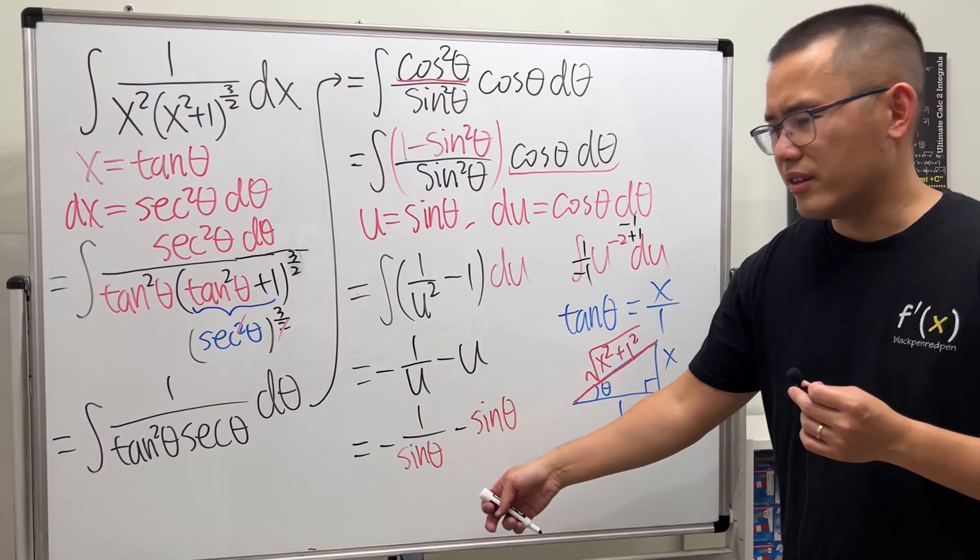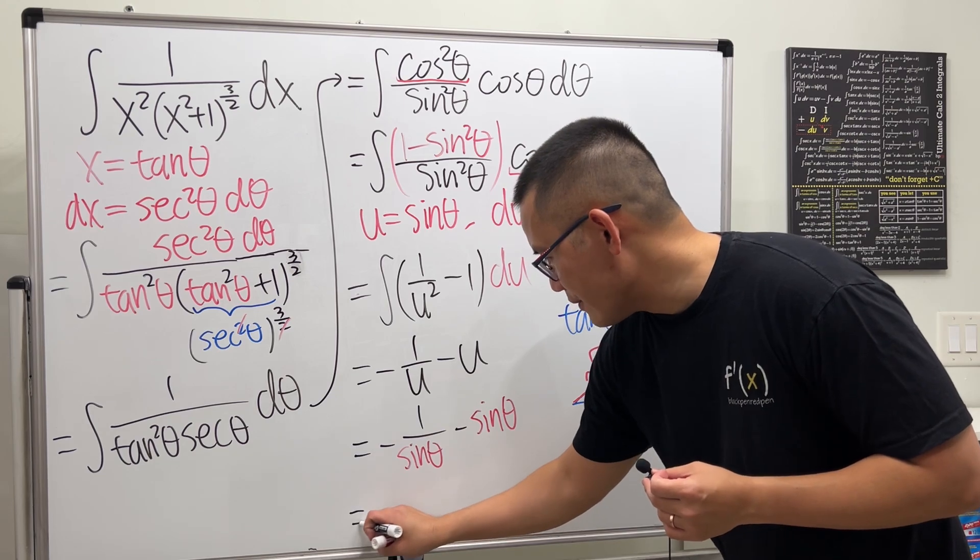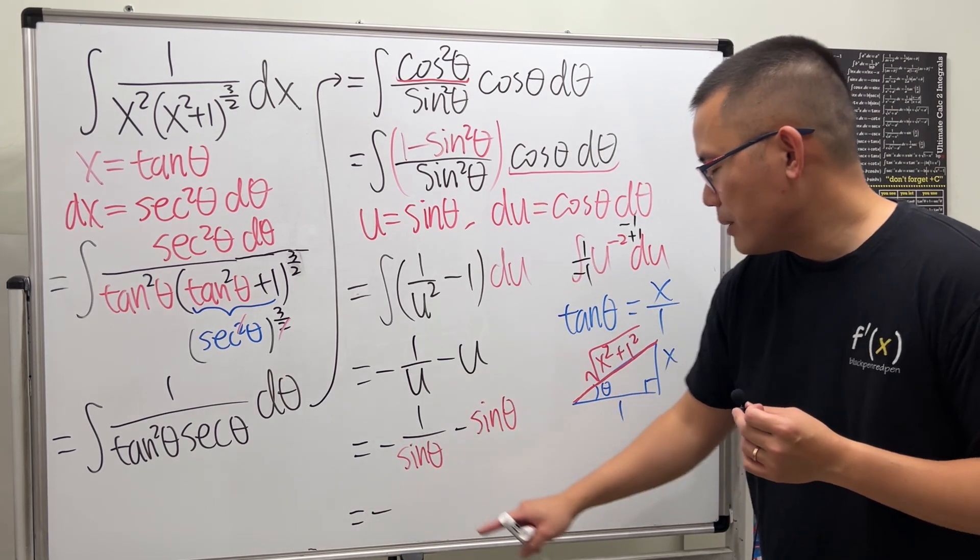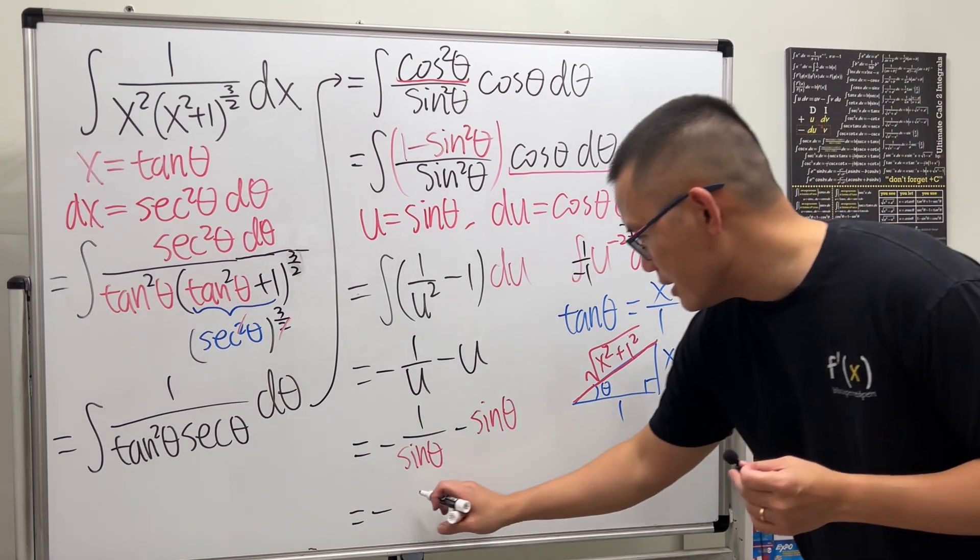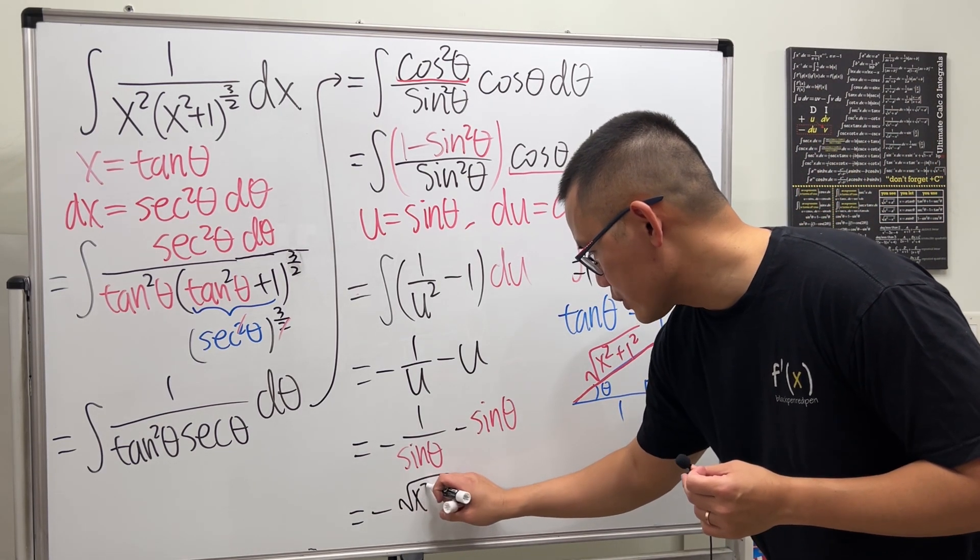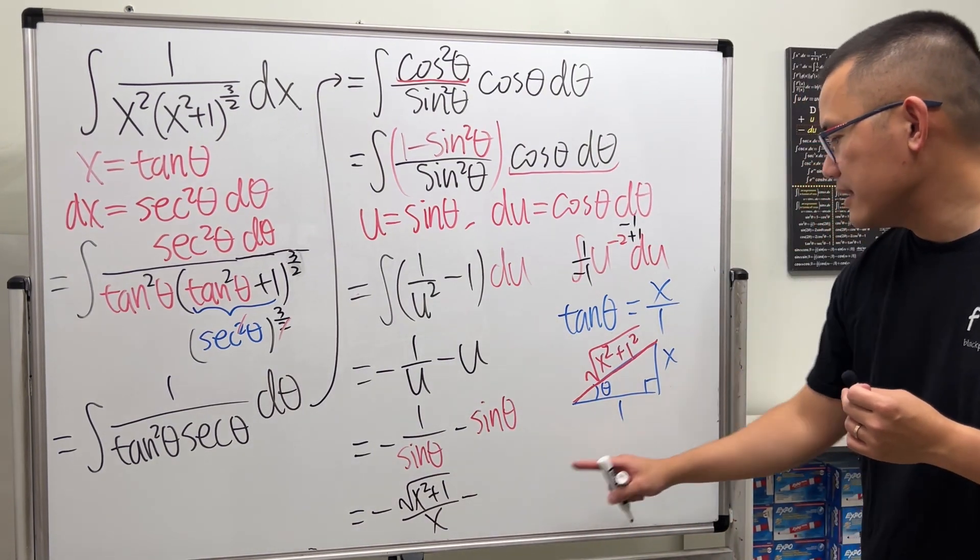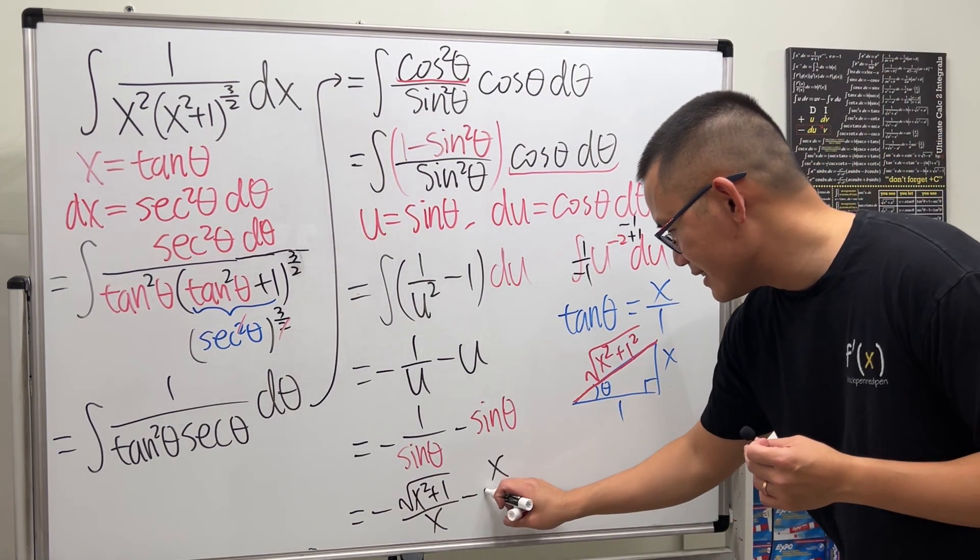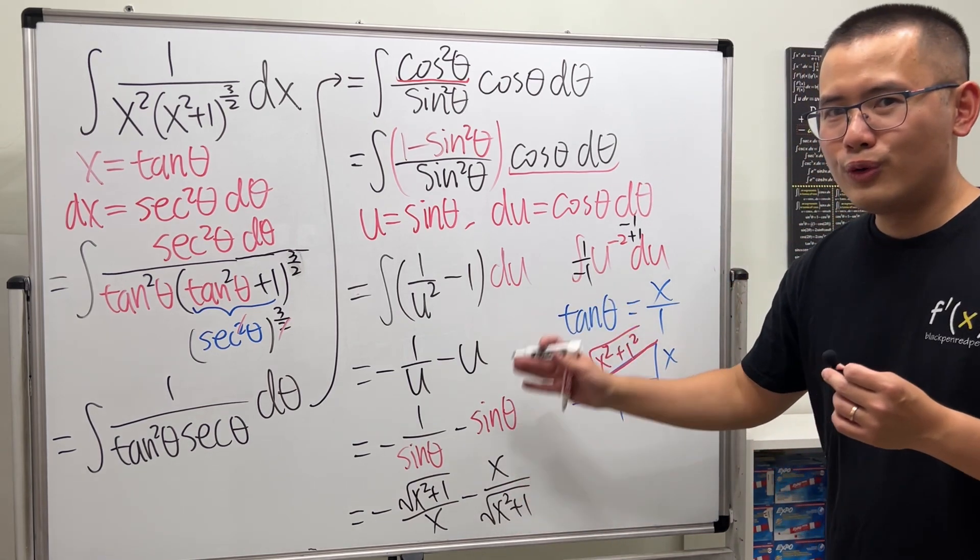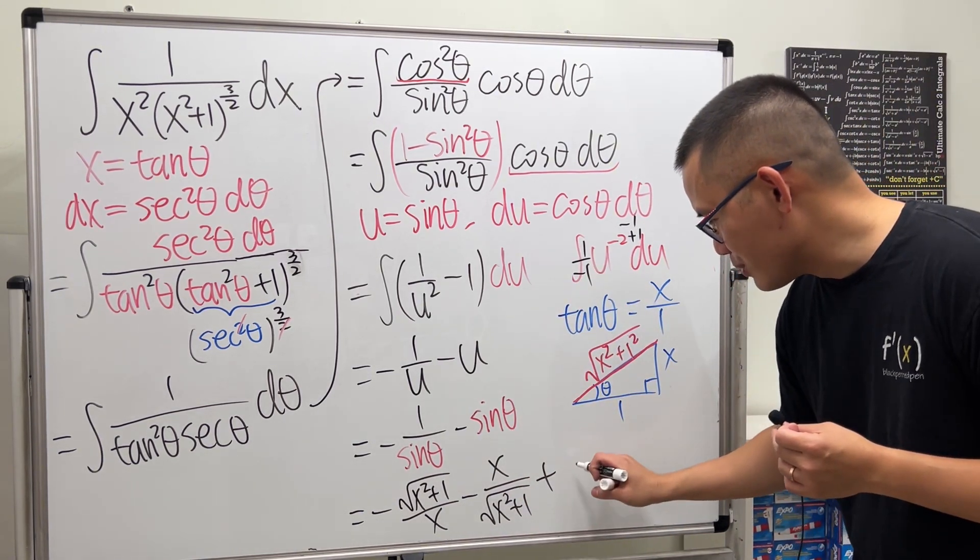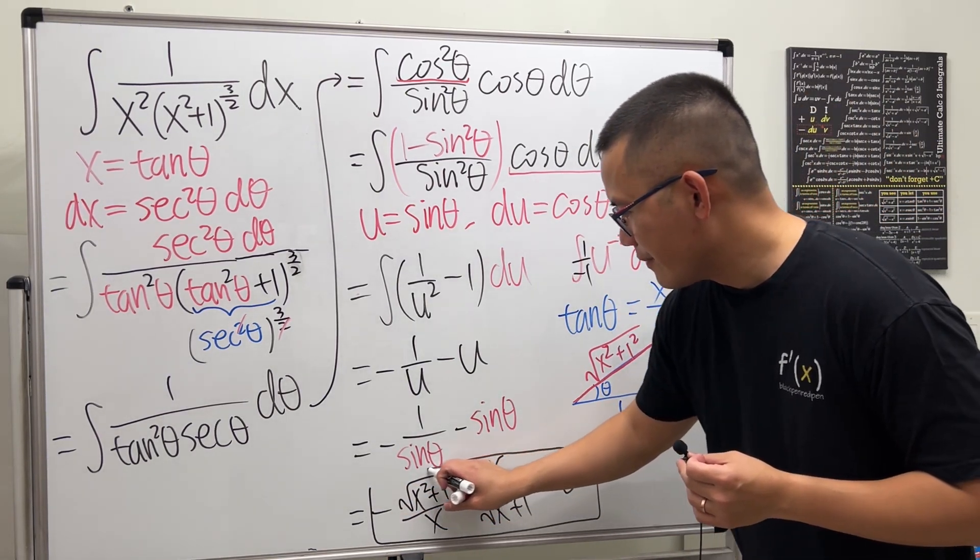This is cosecant theta, which is hypotenuse over opposite: square root of (x squared plus 1) over x. Then minus sine theta is x over square root of (x squared plus 1). Now finally, just put on plus C. This is it, and we are all done.